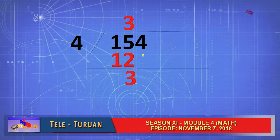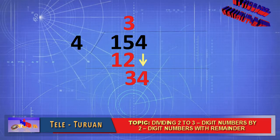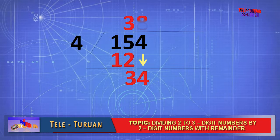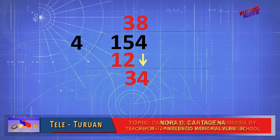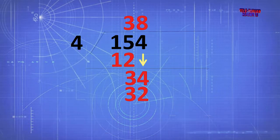Write 3 under 2 and bring down the next digit from the dividend. Now, divide 34 by 4. What is the answer? It is 8. Where will you write 8? Above the number 4. What's the next step? Multiply 8 by 4 and you will get 32. Write 32 below 34. Then subtract: 34 minus 32 equals 2.